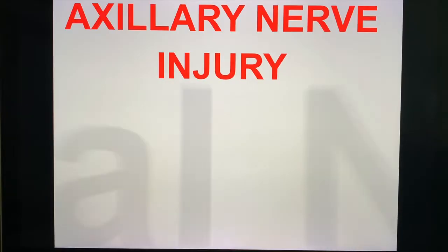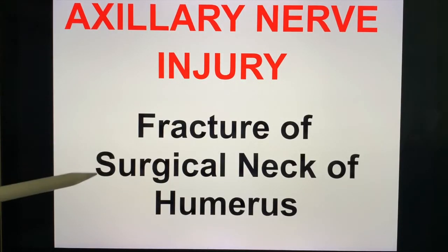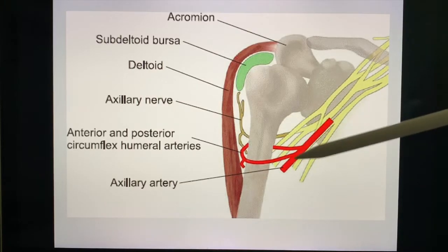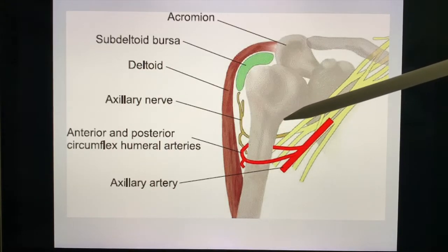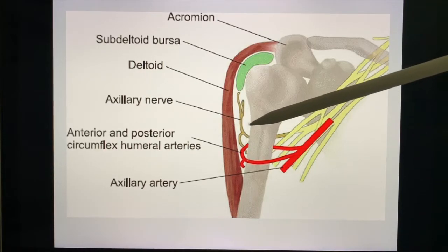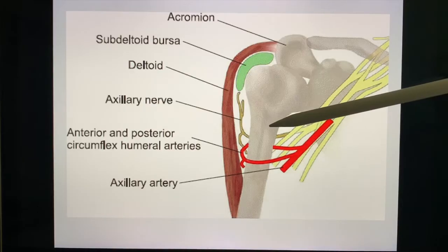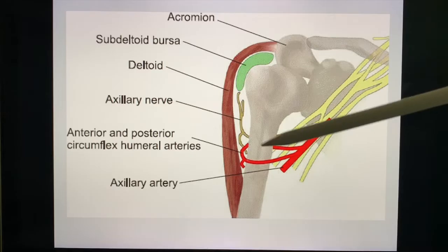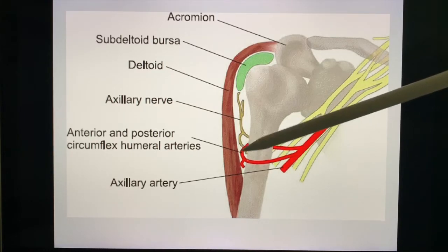What about axillary nerve injury? This usually occurs when there's a fracture of the surgical neck of the humerus. As you can see, this is the surgical neck, this is the axillary artery, and this is the axillary nerve — very close to the axillary area and the surgical neck. A fracture of the surgical neck would damage the axillary nerve as well as the circumflex arteries.